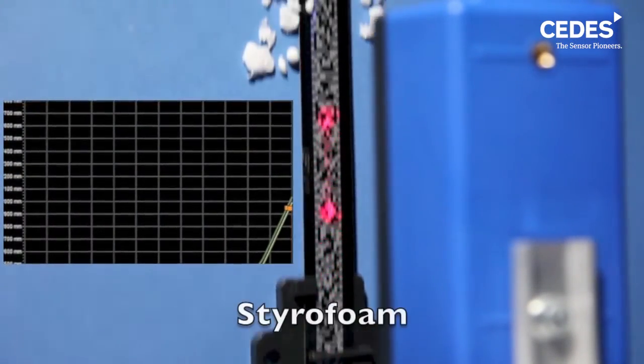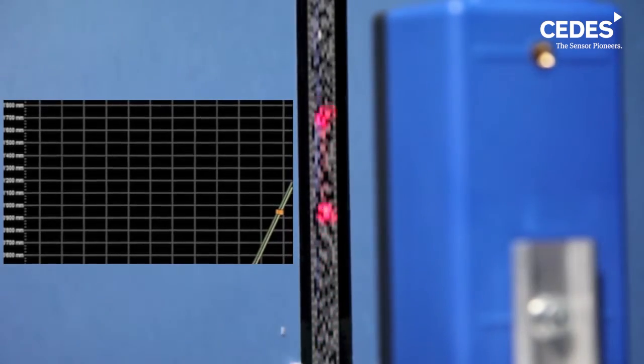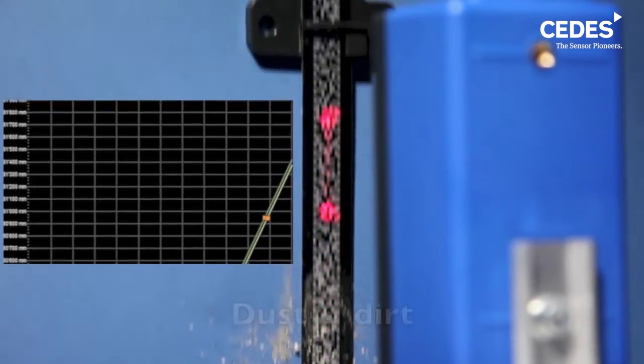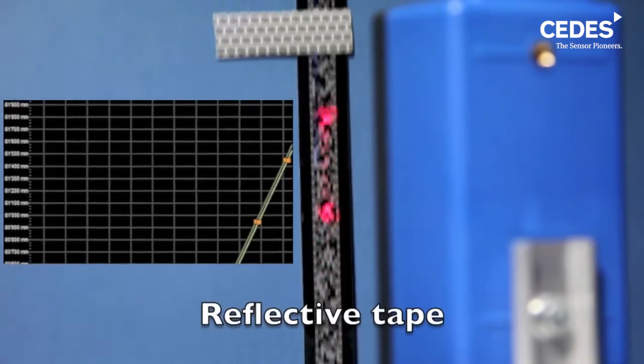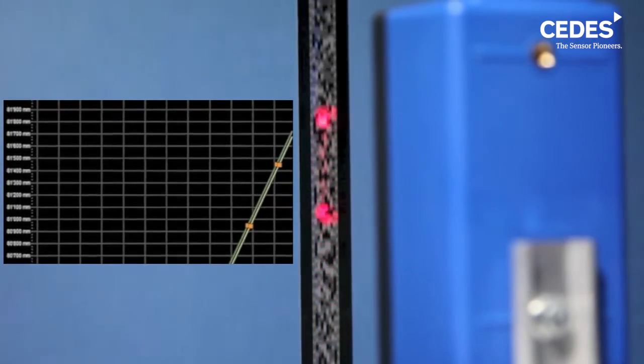Its software enables the APS to ignore dirt or objects on the co-tape, yet still detect the position indicator clips marked in orange on the graph. These clips indicate where the floors are.